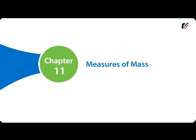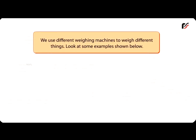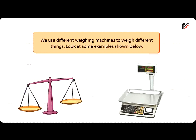Chapter 11: Measures of Mass - Measuring Weight. We use different weighing machines to weigh different things. Look at some examples shown below.